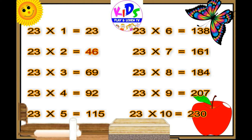23 6s are 138, 23 7s are 161, 23 8s are 184, 23 9s are 207, 23 10s are 230.